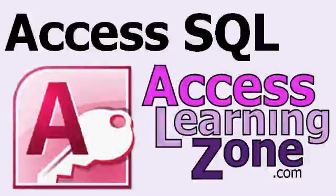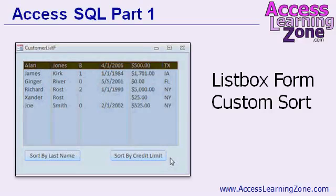Now that you've learned just a little bit of SQL, let me show you what's covered in the rest of the full SQL course. In the rest of part one, we're going to go through some practical examples. The first example will be a form with a list box with several different fields. We'll make a couple of buttons with some custom SQL statements, and we'll be able to change the sort of the list box based on different fields like last name or credit limit. You can do this with a series of complex queries, but if you know a little bit of SQL, you can do it with just one or two lines of code.